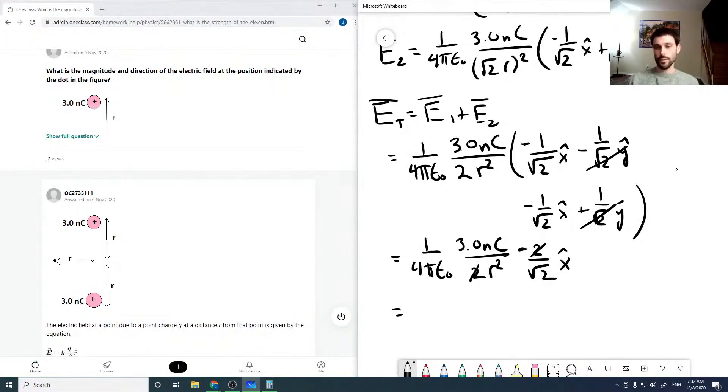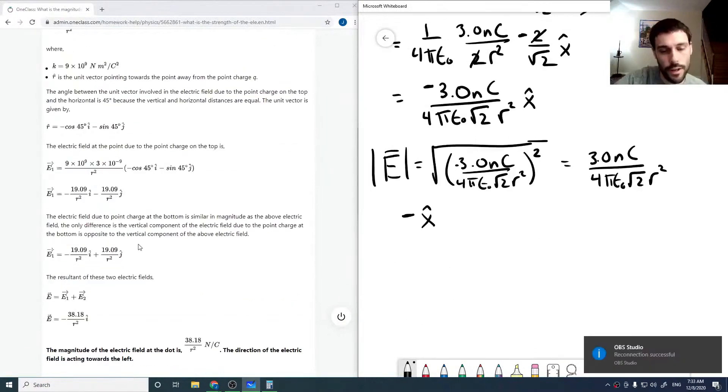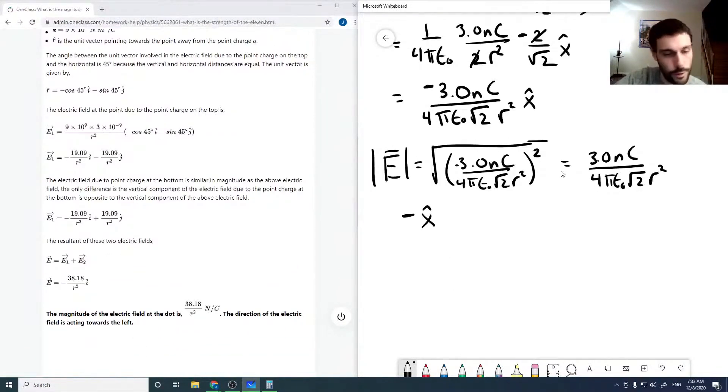So we get minus 3.0 nanocoulombs over 4 pi epsilon naught root 2 r squared x hat. This looks good. They did go through and figure out all the numbers, which you could do, but since everything's still in r, I think that's fine.